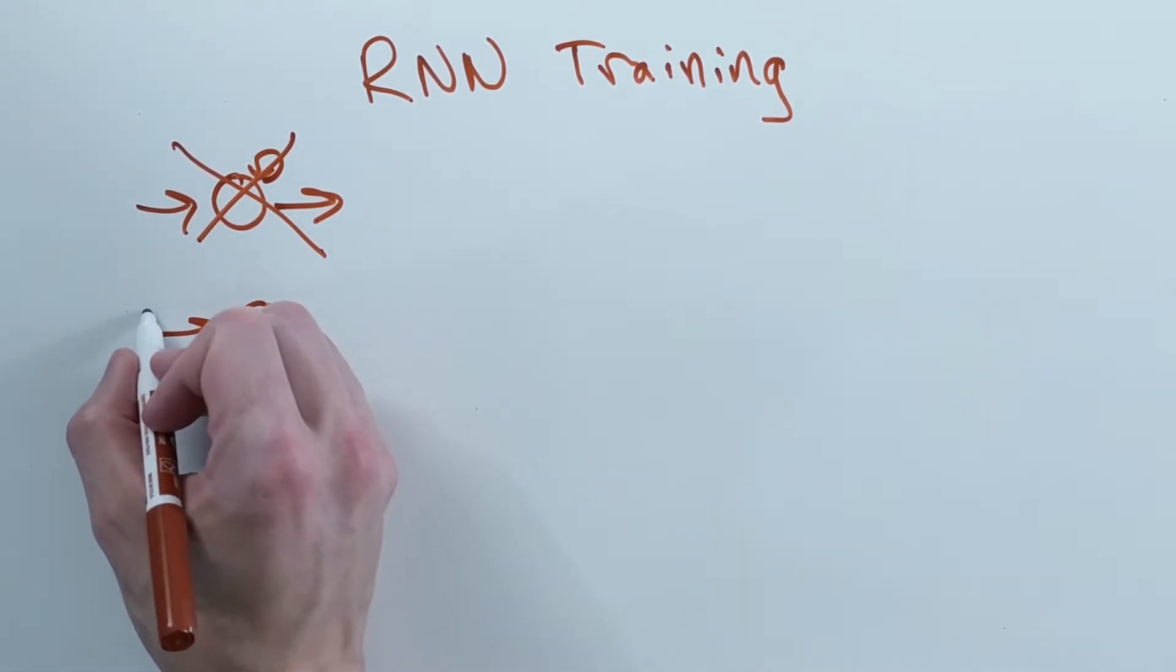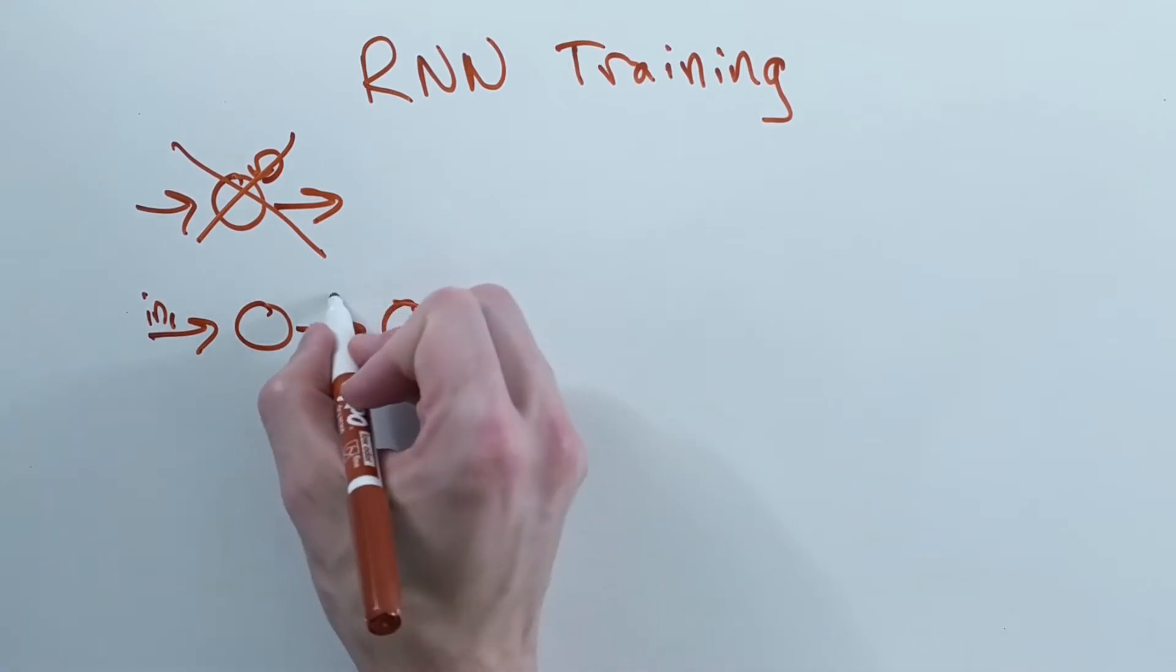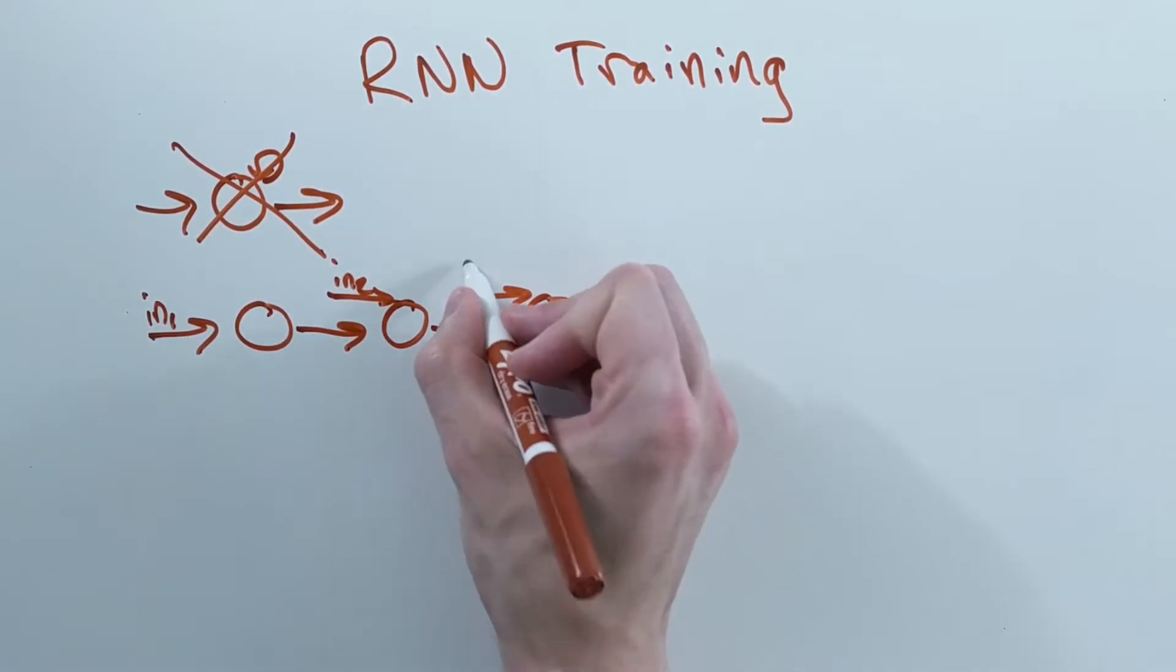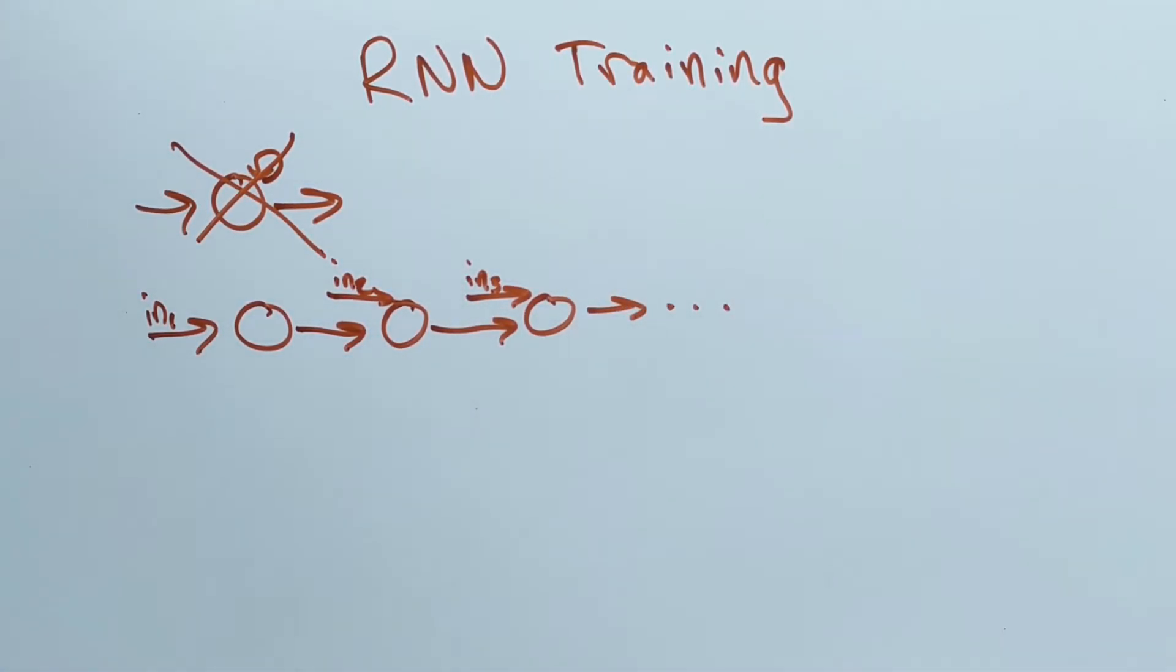So instead what happens is that the RNN gets unrolled a certain number of steps. This effectively makes the RNN into a normal feedforward network, so there are no problems training it.